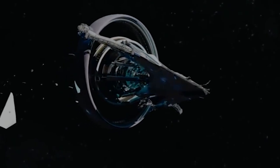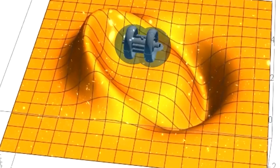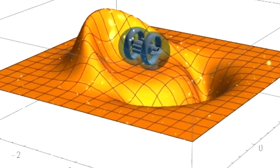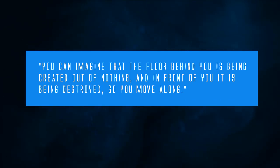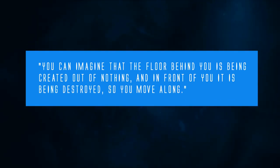So space-time would expand on one side of the ship and contract on the other side. Alcubierre described this process as being similar to standing on a walking escalator. He stated during a lecture, 'You can imagine that the floor behind you is being created out of nothing, and in front of you it is being destroyed, so you move along.'